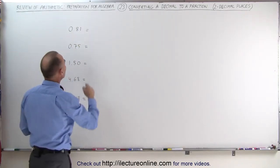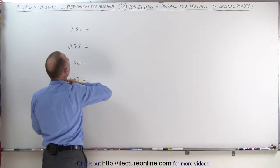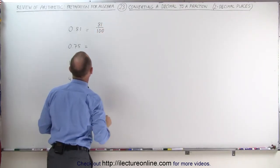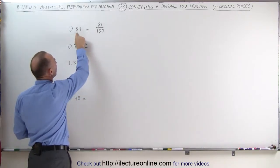To convert, what we're going to do is get rid of the decimal and simply write this as 81 over 100, because this is 81 hundredths.